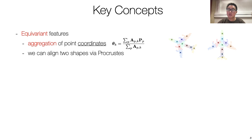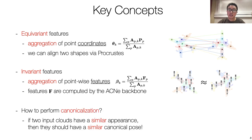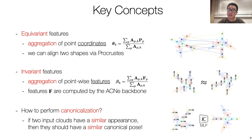If the object rotates, so do the capsule poses. Further, note that Procrustes alignment can be used to align two objects given their capsule poses. Similarly, we aggregate the features of the points within the same cluster to build our invariant capsule descriptors. We use the ACNE backbone to compute these per-point features. Note that these descriptors should not change under transformation of the object. Moreover, we can use these capsules for canonicalization. Two input point clouds with similar appearance should be similarly canonicalized. We enforce this behavior by asking an MLP to regress the capsule poses in a canonical space based on the descriptors. Note that rotating the input leaves the invariant features unchanged, resulting in the same canonicalization.